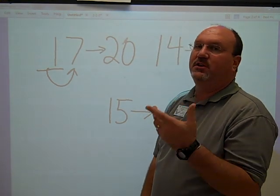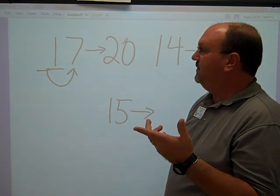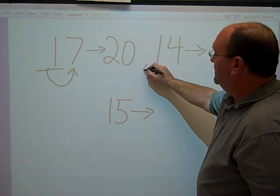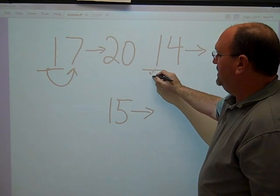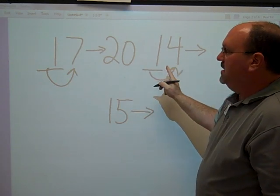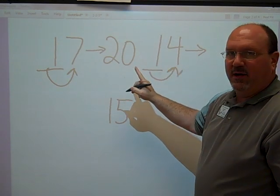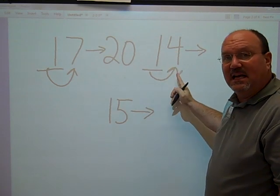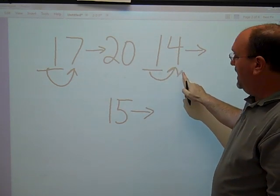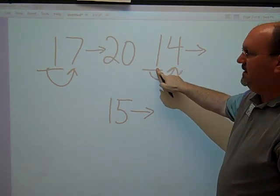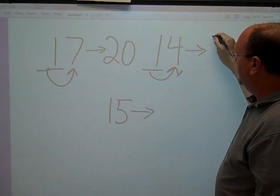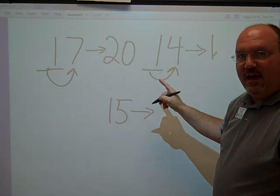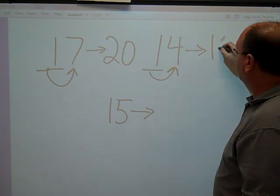Let me show you again how it works when the number is less than five. Underline the digit, look next door. If it's five or bigger, that doesn't count here. If it's less than five, leave the number for sure — leave it as a one. Everything after is a zero to the core.